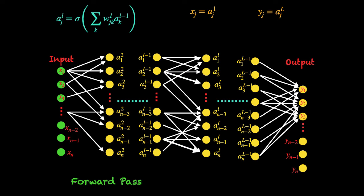The first step in the ANN is what is called the forward pass. We know the input values from the data set, and using the weight values we calculate the values of the next layer and so on. You may ask: where do the weight values come from? The purpose of back propagation is to compute these weight values that give you the desired output. Initially, since we don't know the weights, we initialize them randomly to some small values and then use back propagation to update them.